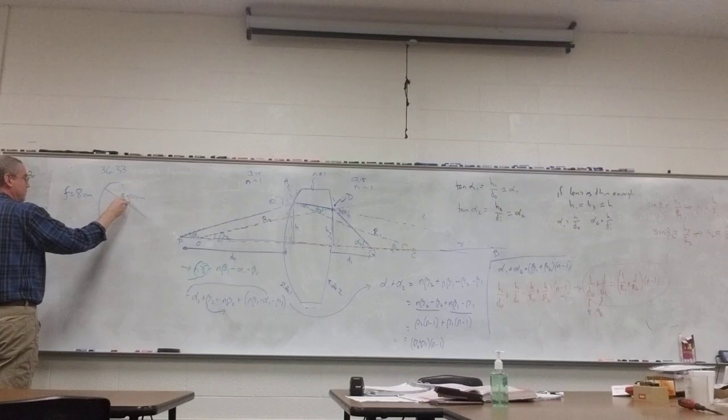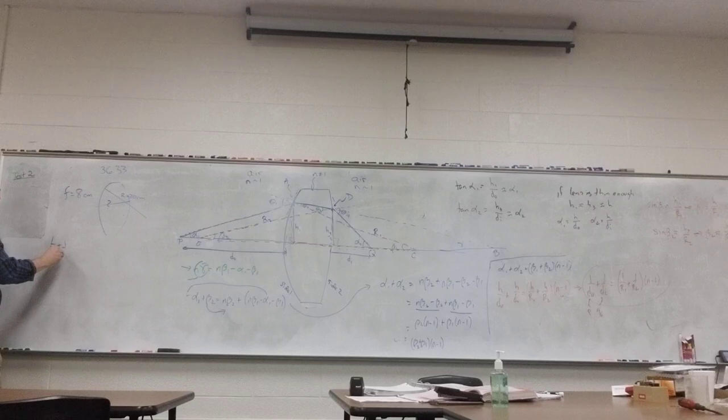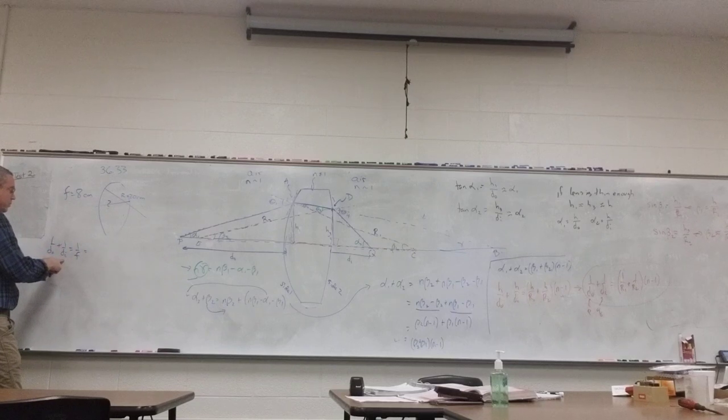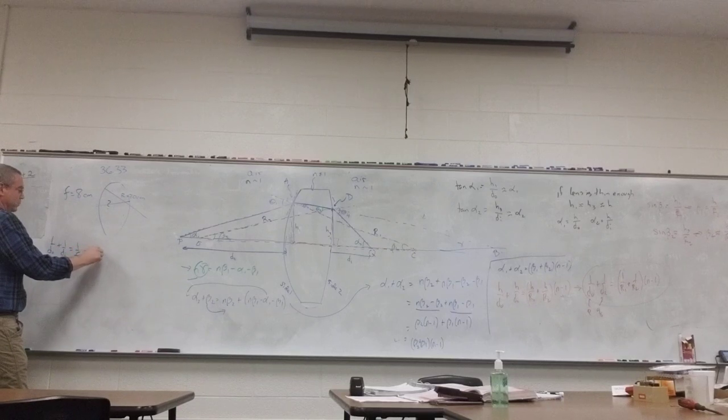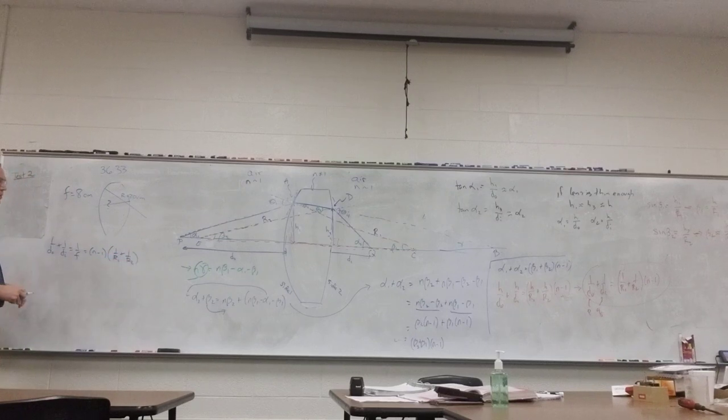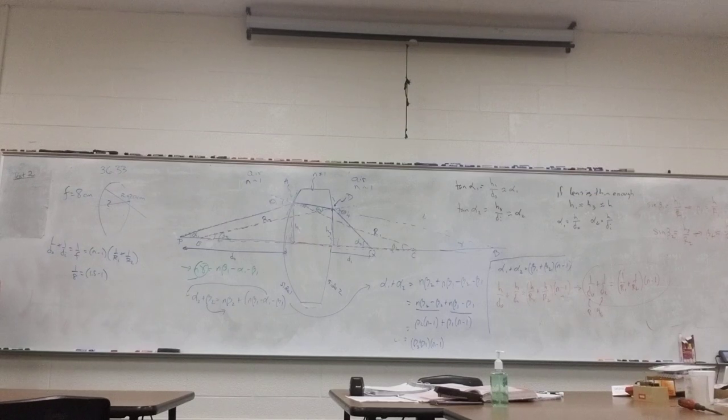So we want a focal length total of 8 centimeters. So what does this side need to be? Well, I know 1 over the object distance plus 1 over the image distance is equal to 1 over the focal length. And that equals n minus 1 times 1 over R1 plus 1 over R2. The lens maker's formula or equation. So we want this to be 8 centimeters, so 1 over 8 equals 1.5 minus 1. It does need to be 1.5. They don't state that in the problem, but that's the way that you get the answer they give.